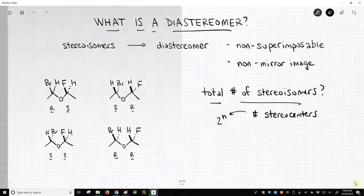Welcome to Chem Help ASAP. Let's discuss diastereomers. What is a diastereomer? Well, diastereomers are a type of stereoisomer.